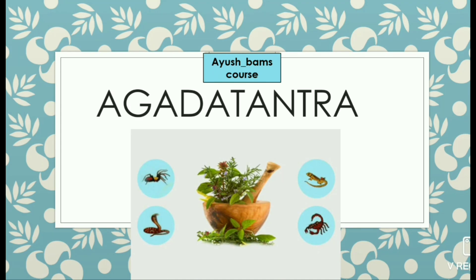Hi everyone. In third year we will start with Agadha Tantra, chapter one. Before going into the concept, we should learn what is Agadha Tantra. It is a branch of science which deals with the signs and symptoms and management of poisoning due to snakes, scorpions, spiders, and other animals, and it is termed as Agadha Tantra.